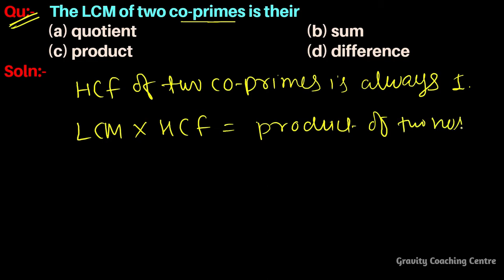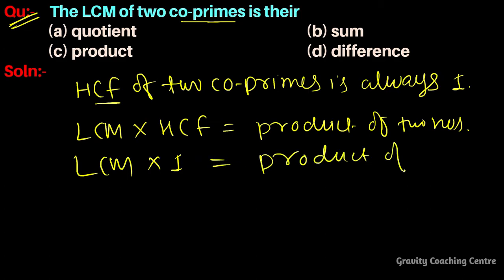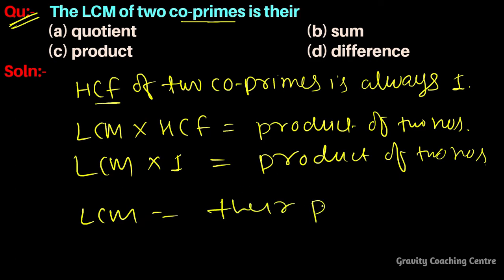So HCF value 1 into LCM equals the product of two numbers, which means LCM equals their product. So option C is the correct answer.